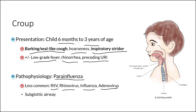Croup is going to involve the subglottic airway. This should not be surprising, because the subglottic airway is consistent with this being an extrathoracic obstruction, which is the reason why this condition is going to result in inspiratory stridor. As discussed previously, the subglottic airway extends from the true vocal cords down to the upper one-third of the trachea.